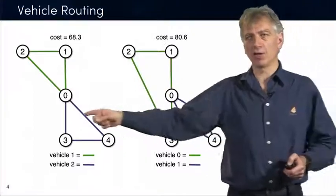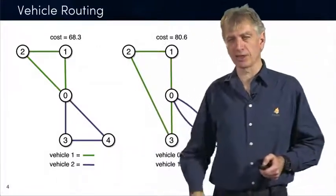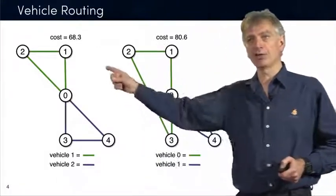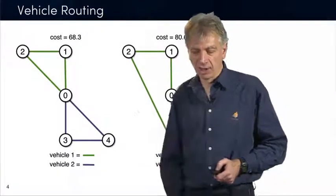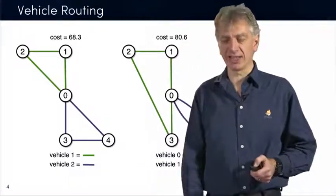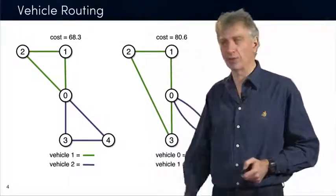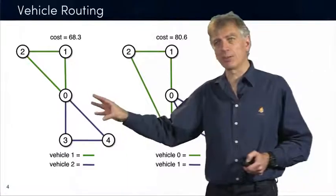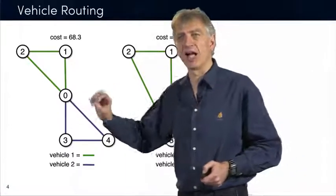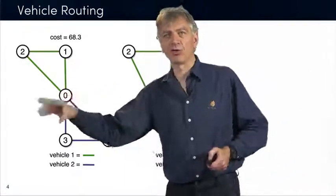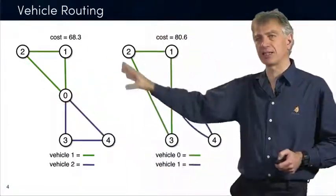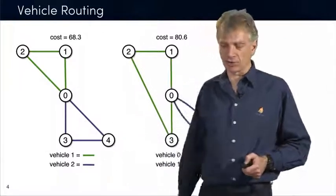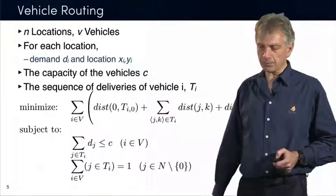This is another set of tours which is actually better. The cost is only 68.3, and once again it satisfies the capacity constraint. So the goal of the assignment is to find these better tours for every one of the vehicles, satisfying the capacity constraint and minimizing the total travel distance.